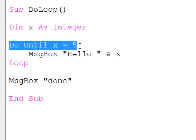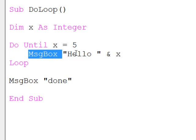I'm saying do until x equals 5, here's my block of code, or single line of code, and then loop.